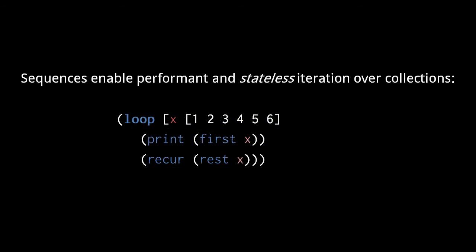A core purpose of the sequence interface is to enable iteration over collections. Here, for example, we use the special forms loop and recur with the first and rest functions to iterate through every element of a vector.